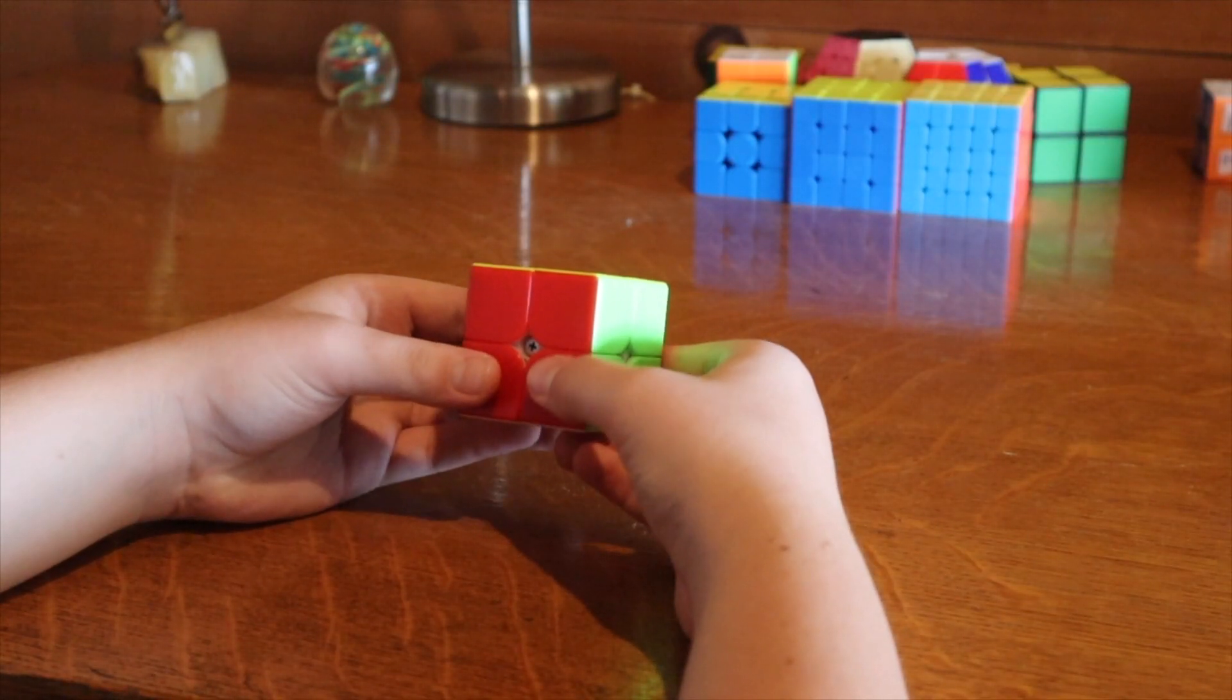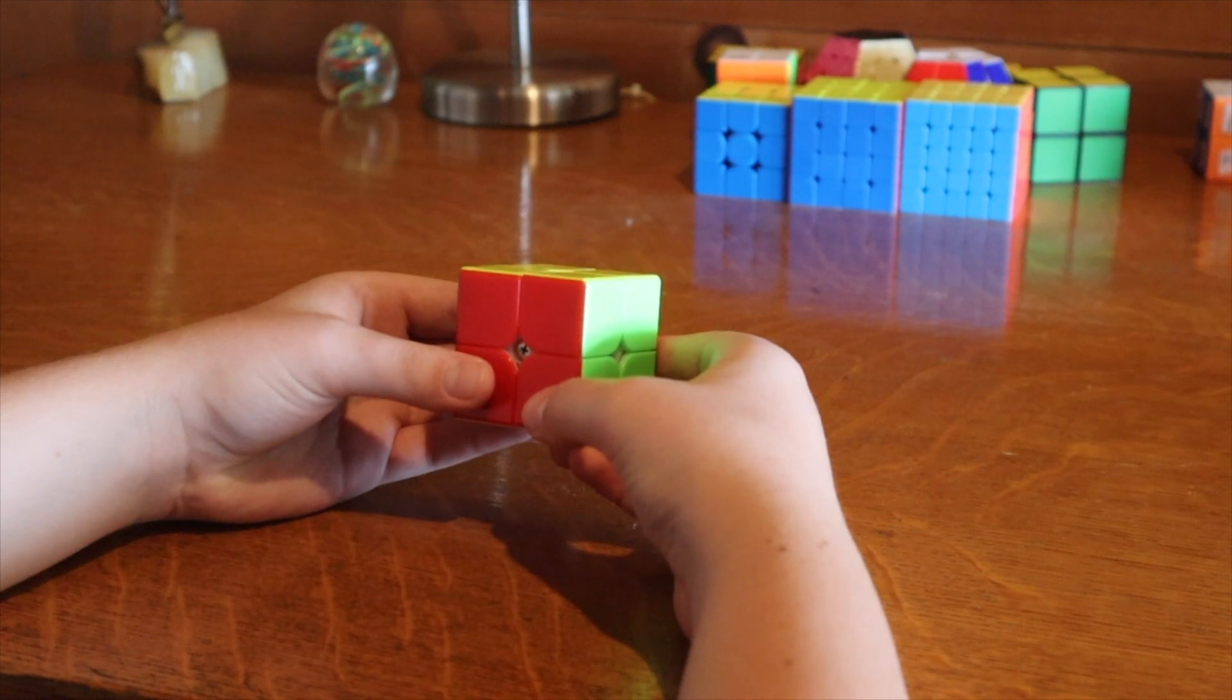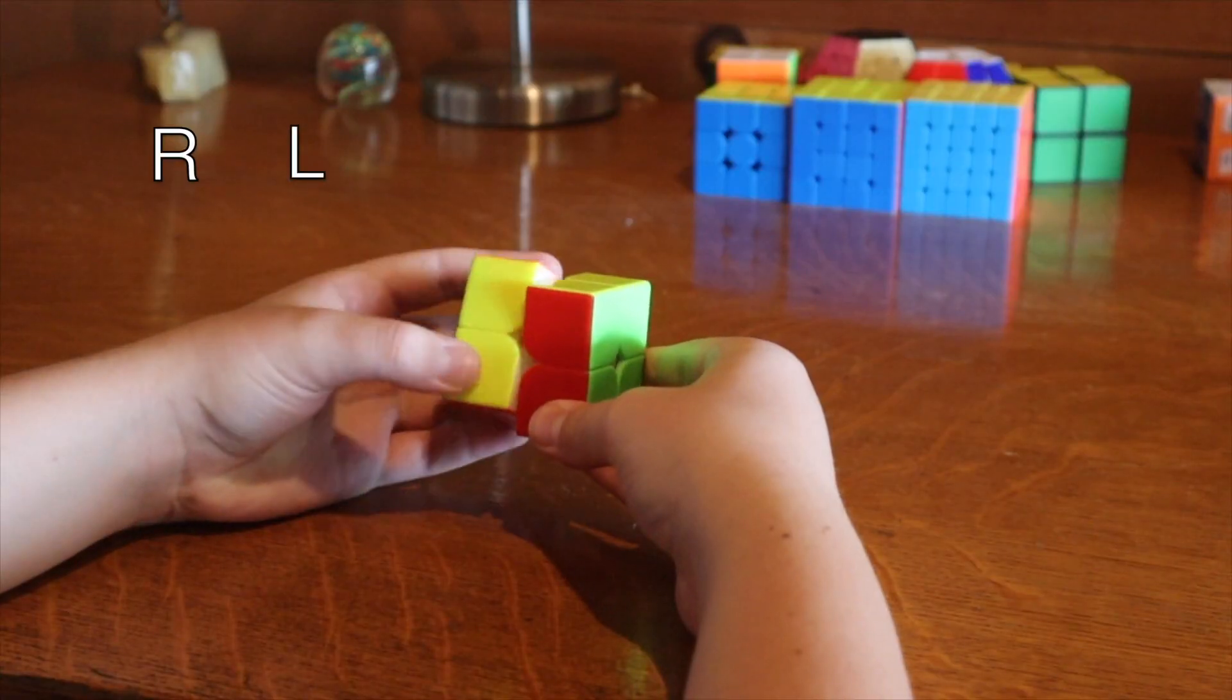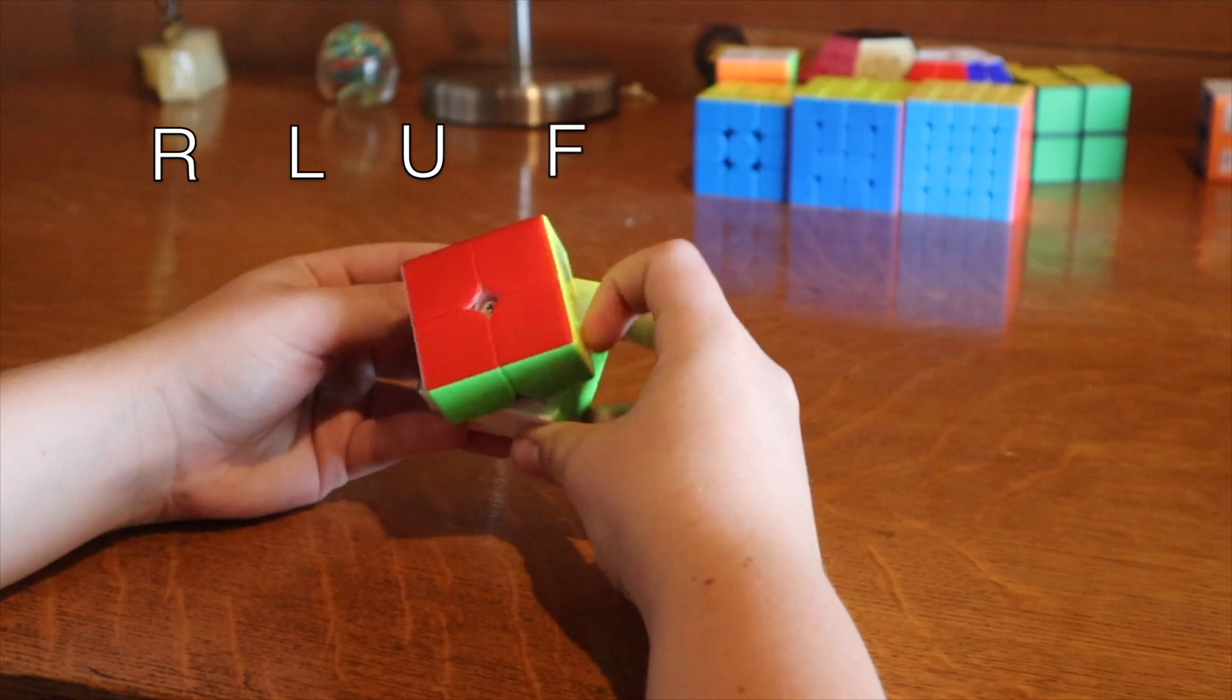Any letter on its own is a 90 degree clockwise turn for that face. So we have R, L, U, F, D, and B.